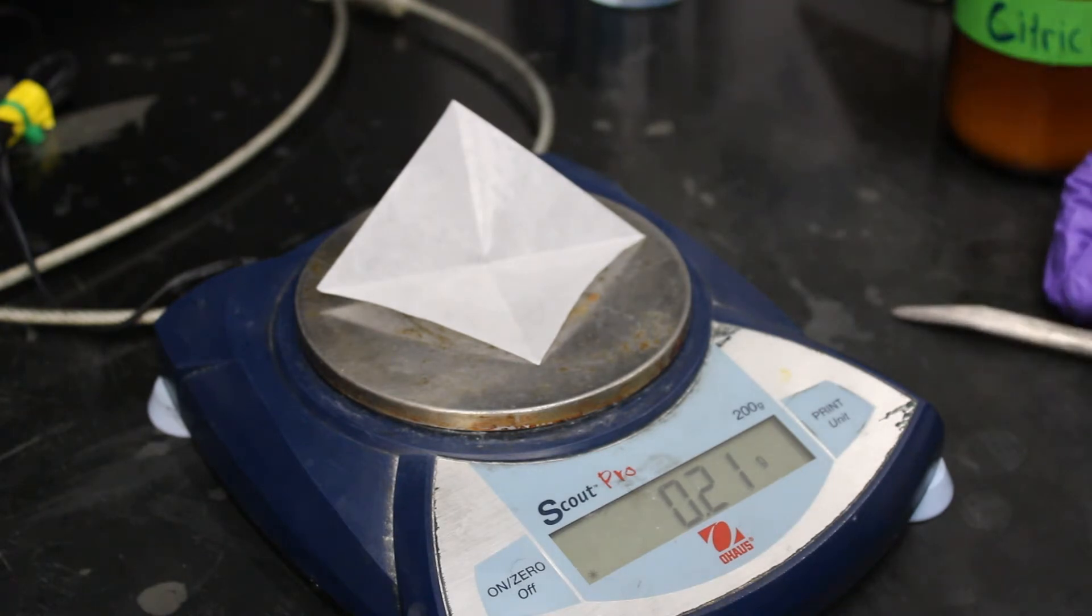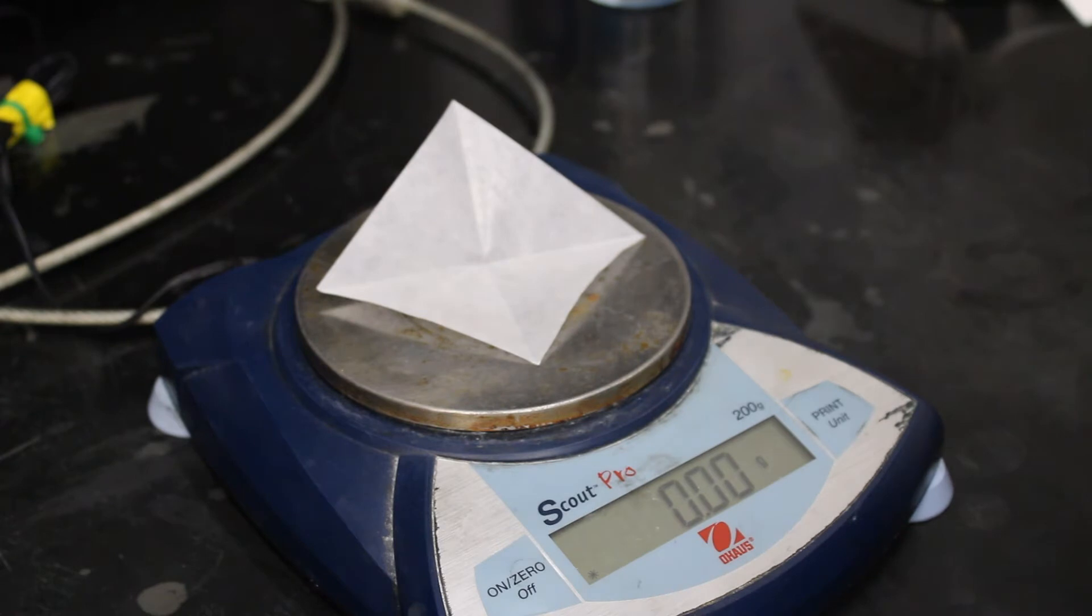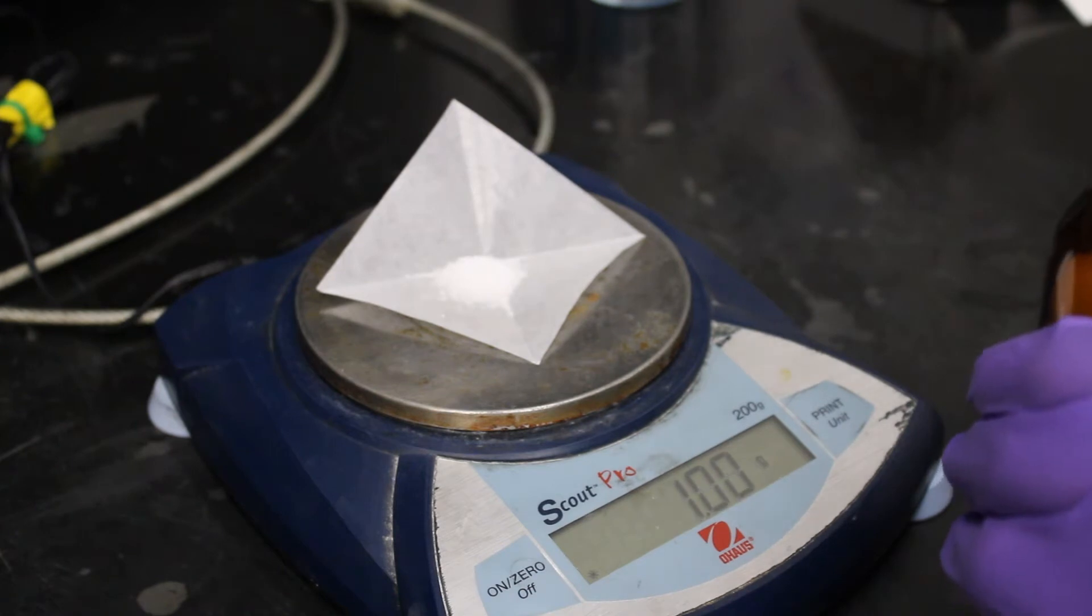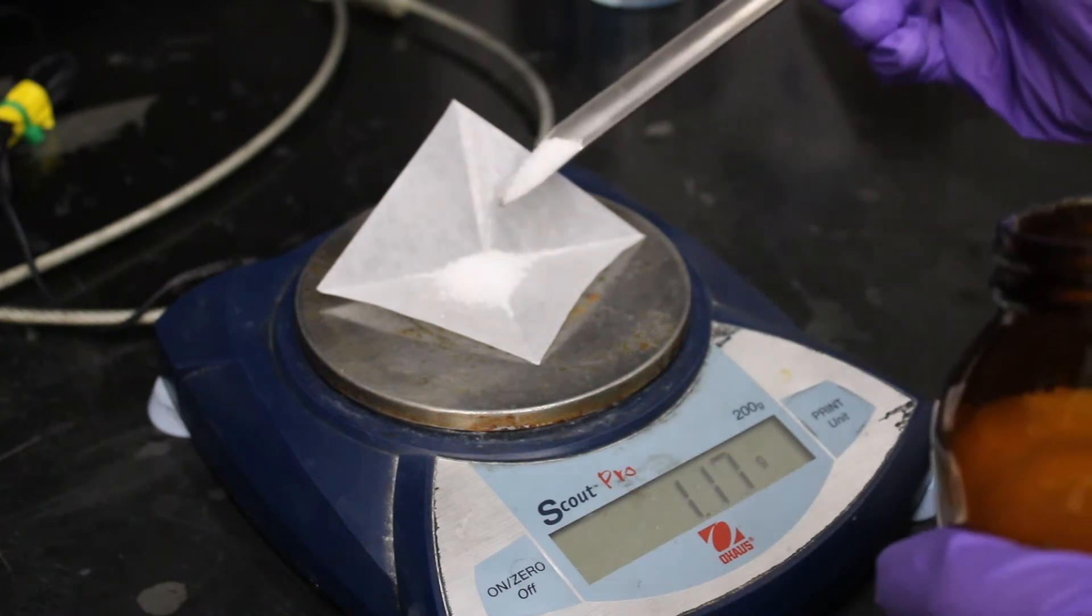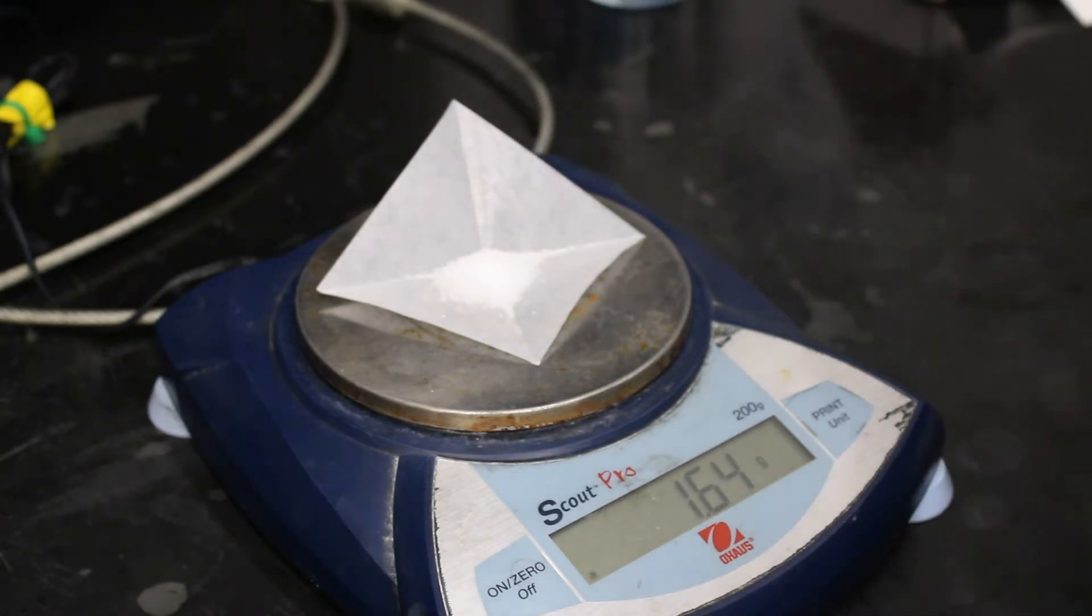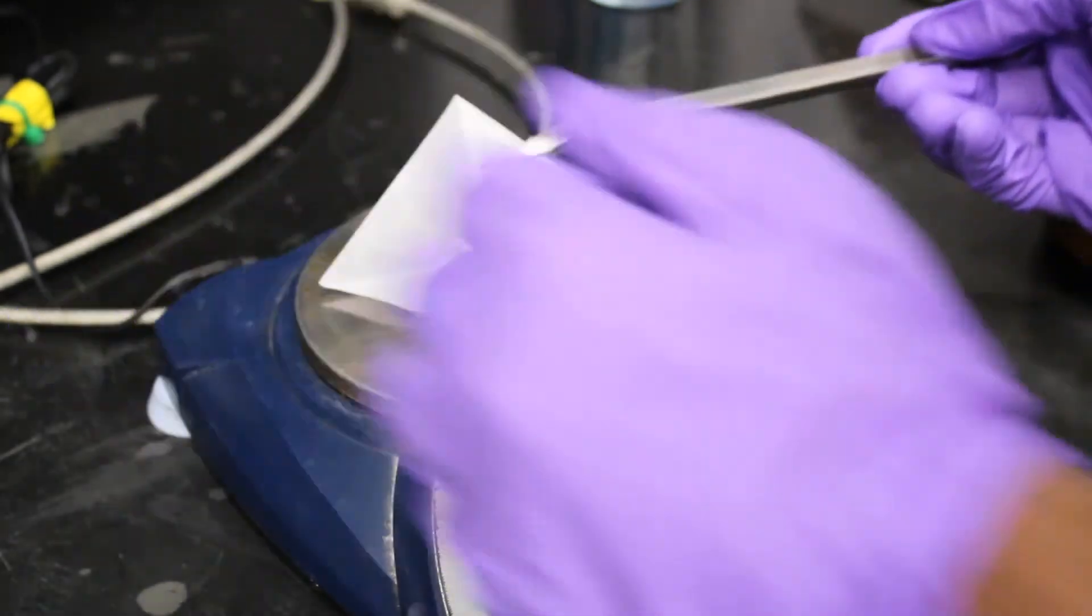When measuring out any solid, place the weighing paper on the weighing scale and zero out the scale. Use the spatula to slowly measure out 1.5 grams of citric acid onto the paper. Slowly tapping on the spatula will allow you to finely control the mass added to the weighing paper.